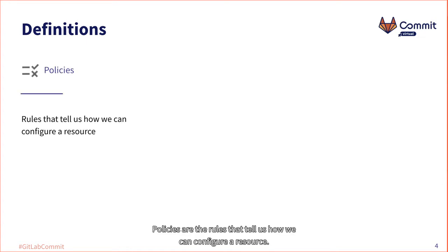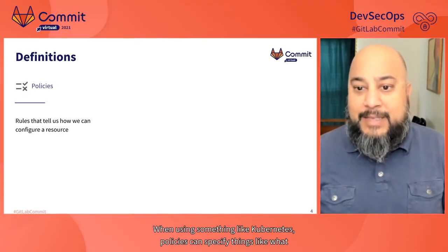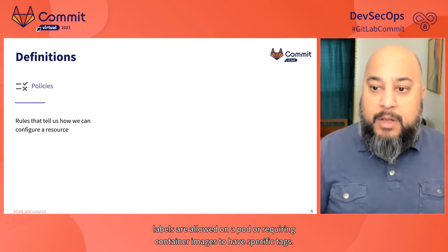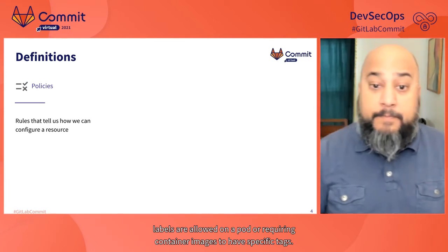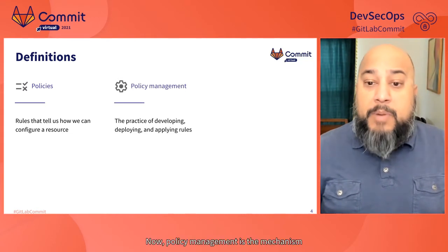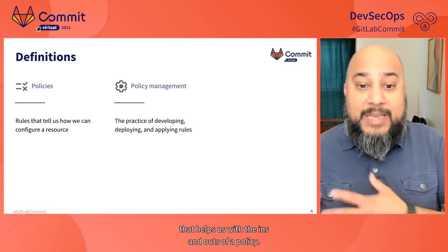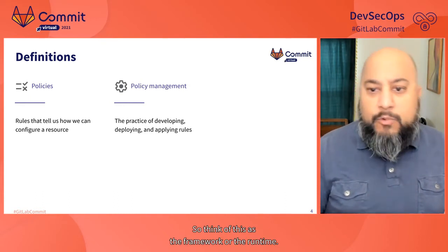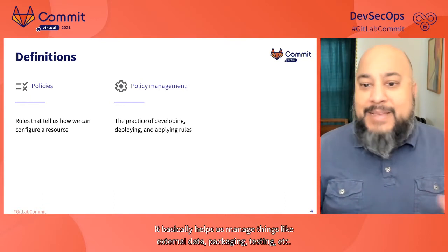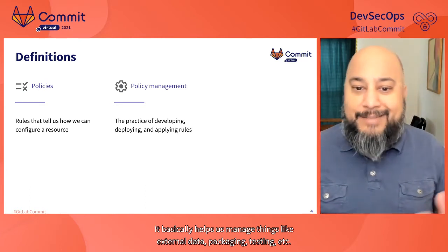Policies are the rules that tell us how we can configure a resource. When using something like Kubernetes, policies can specify things like what labels are allowed on a pod or requiring container images to have specific tags. Policy management is the mechanism that helps us with the ins and outs of a policy — think of this as the framework or the runtime. It helps us manage things like external data, packaging, testing, etc.